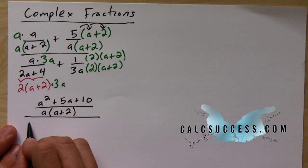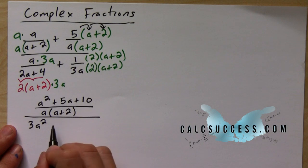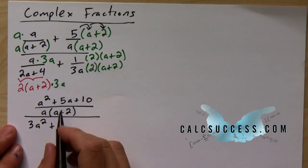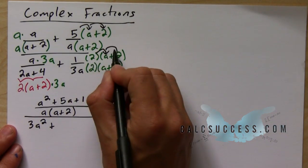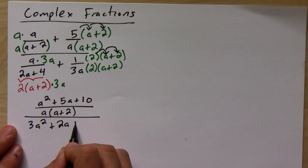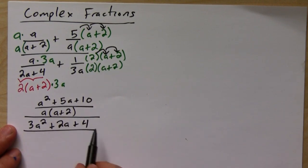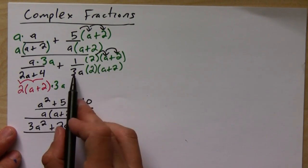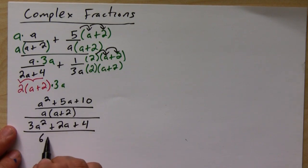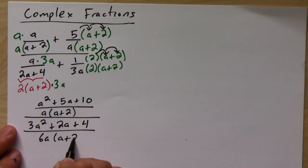Okay, and then on the bottom I'm going to have 3a squared, plus, and then if I distribute this 2, I'm going to get plus 2a plus 4. And this is all going to be over - I multiply the 3 and the 2 - I'm going to get 6a times (a plus 2).